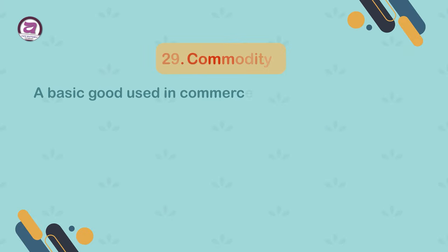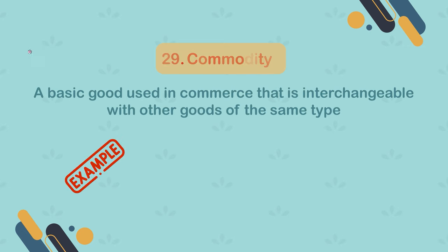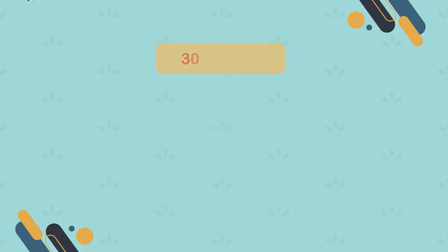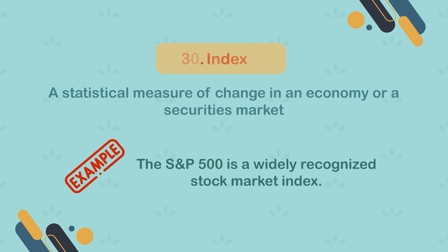29. Commodity. A basic good used in commerce that is interchangeable with other goods of the same type. Example: oil, gold and wheat are all commodities. 30. Index. A statistical measure of change in an economy or a securities market. Example: the S&P 500 is a widely recognized stock market index.